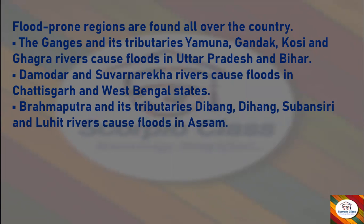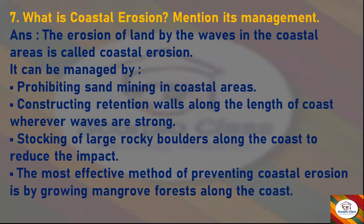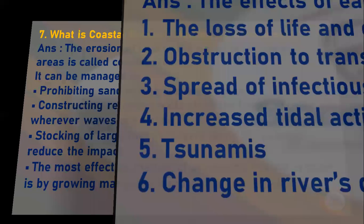What is coastal erosion and mention its management. The erosion of land by the waves in the coastal areas is called coastal erosion. It can be managed by: prohibiting sand mining in coastal areas; constructing retention walls along the coast wherever waves are strong; stacking large rocky boulders along the coast to reduce the impact. The most effective method of preventing coastal erosion is by growing mangrove forests along the coast.